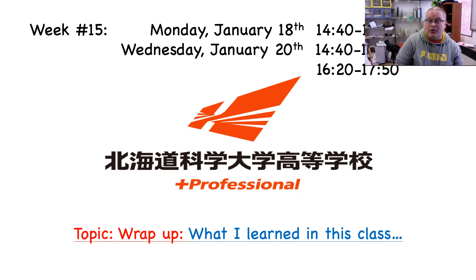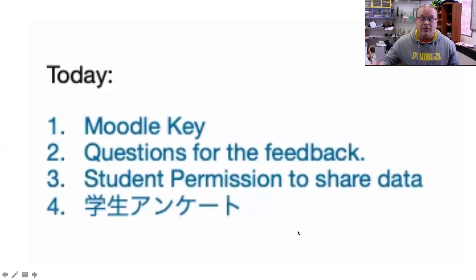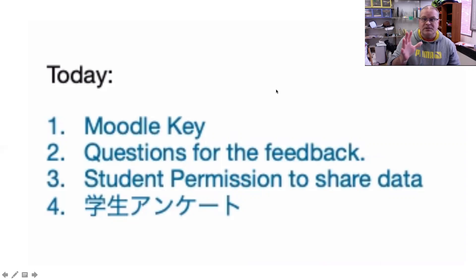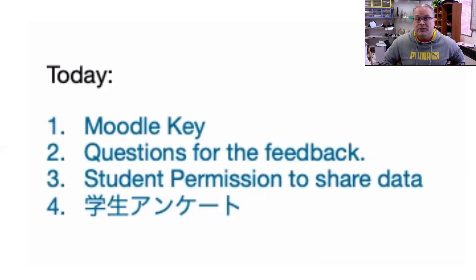This will be a very short video, so we're going to do this quickly. First, four things you need to understand. Number one, the Moodle key. Make sure that you put your attendance key, the Moodle key, into the Moodle attendance. We will give you the attendance key, so make sure that you go to the Moodle and check in, so you get your attendance, your Shuzuki.